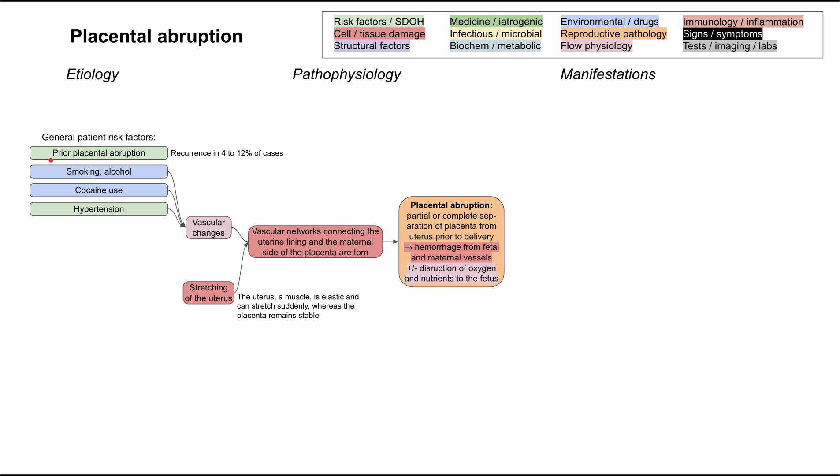Having a prior placental abruption is a risk factor because you had some problem the first time, and that puts you at risk for having that same problem or additional associated problems a second time. One study found that there's recurrence of placental abruption in about 4 to 12 percent of cases.